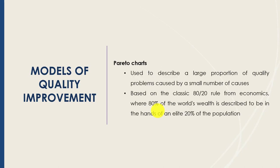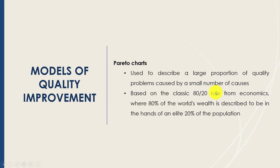Another tool is the Pareto chart. This is a very helpful tool that allows the team to identify the primary or high-priority areas responsible for large amounts of quality problems. It is based on the classic 80/20 rule from economics.